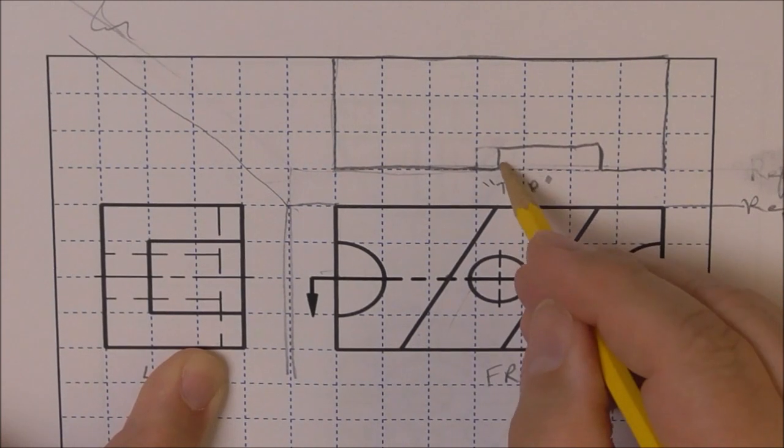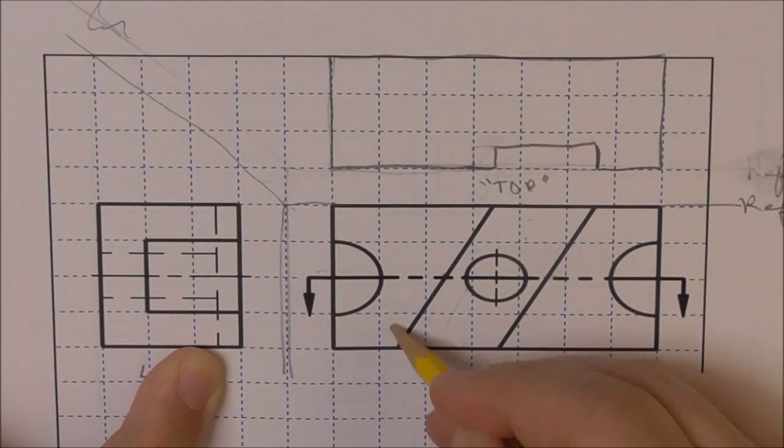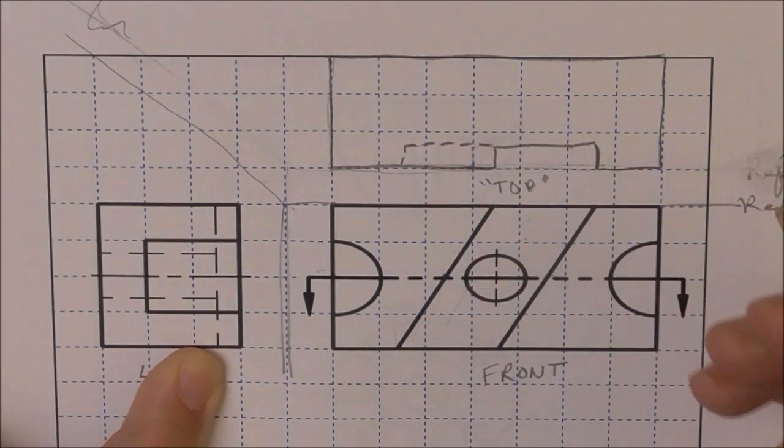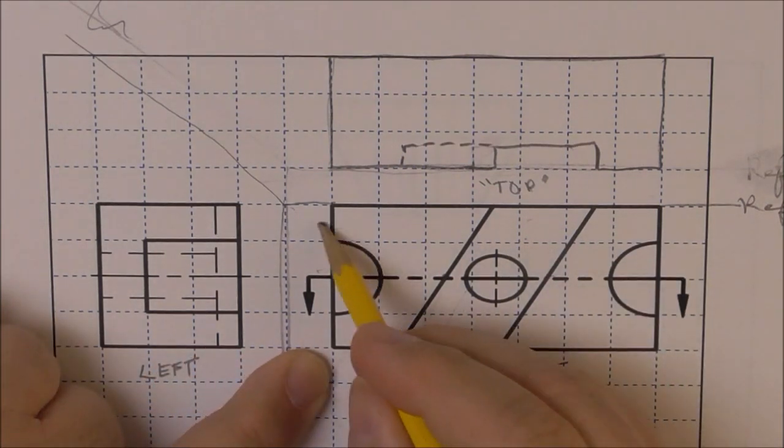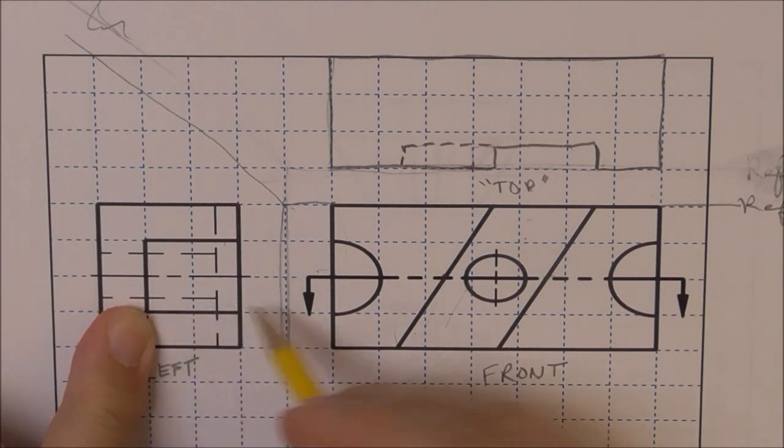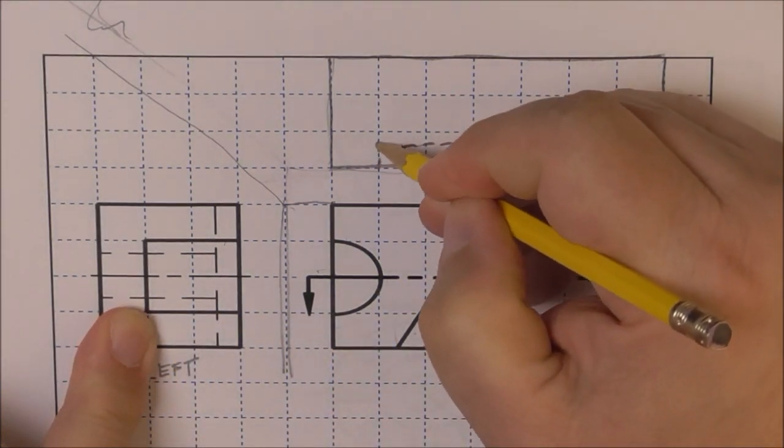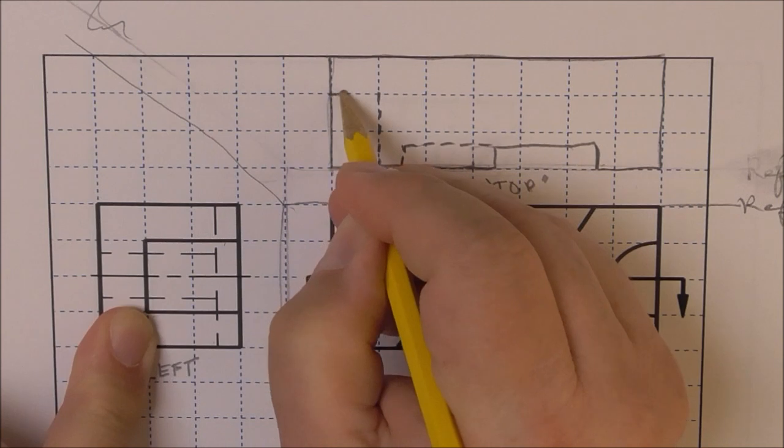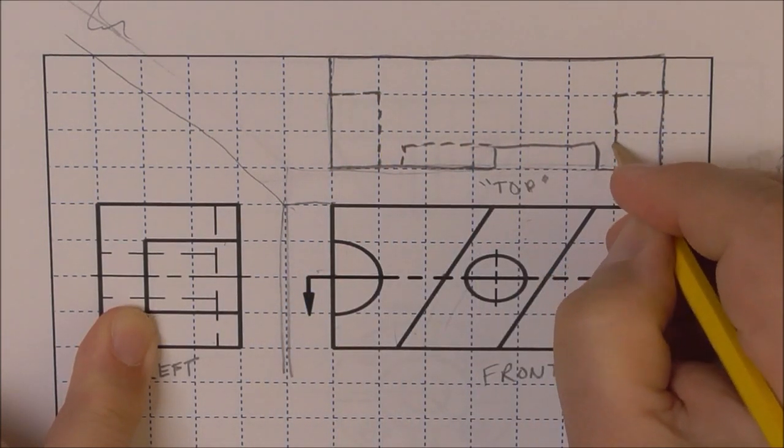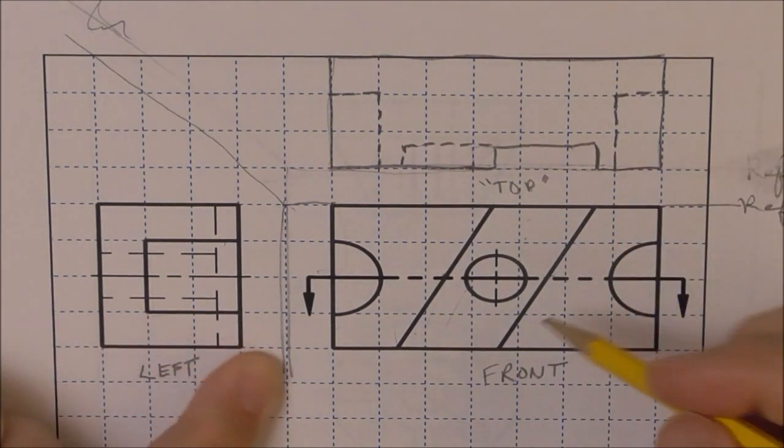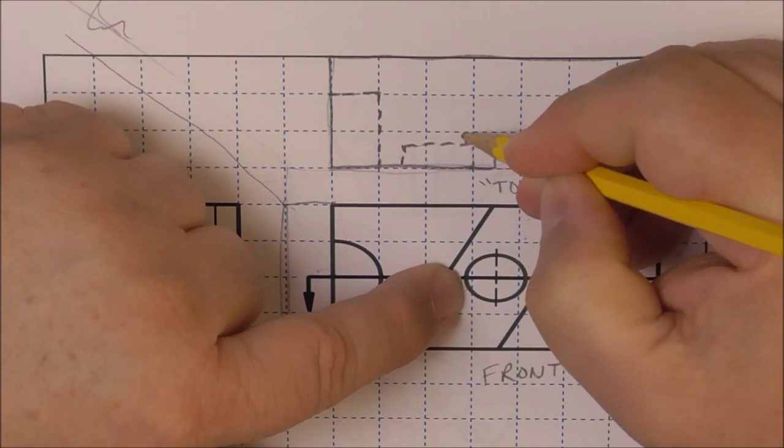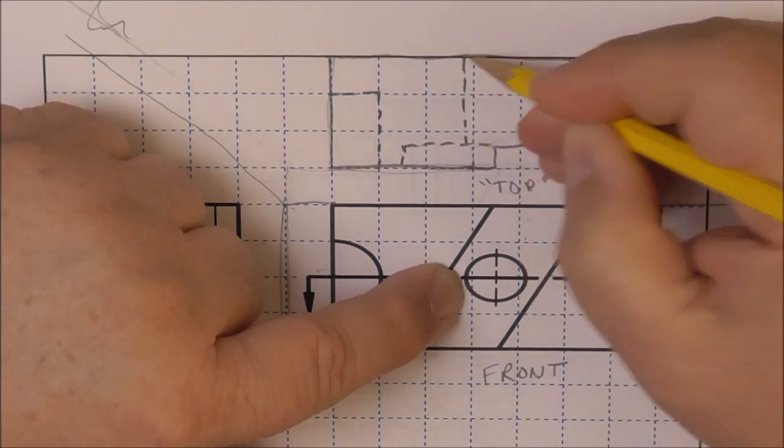Now the slot is from the top, it's hidden back to here. Here's my hidden line. This cylinder, half cylinder, is this feature, two units deep. The hole is a little bit wider than one block.